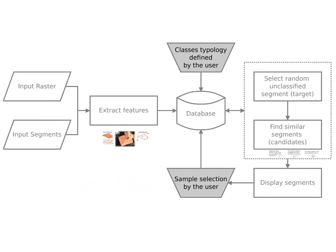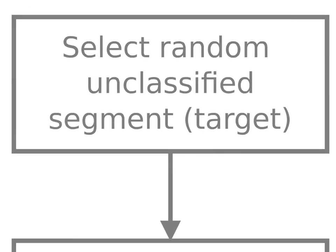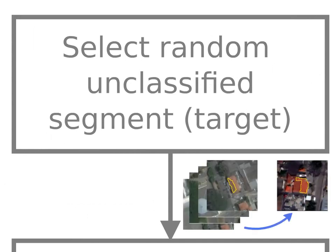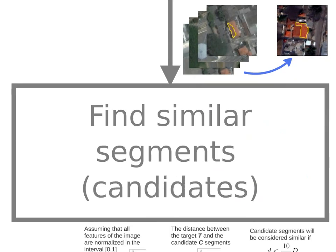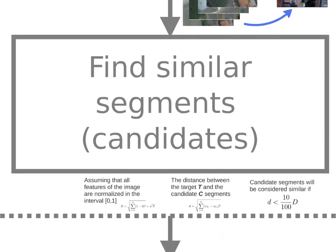The user must define a typology — that means the user must say to the database what are the expected classes in the image. The first step in our approach is to select random, unclassified segments. Since we have lots of segments in the image, we pick one randomly — we call this segment a target — and ask the user: 'What is the class of this segment?' Also, given that specific target, we find similar segments spread over the entire image. We call these segments candidates.